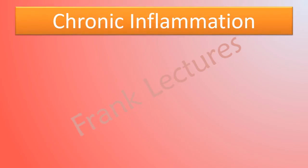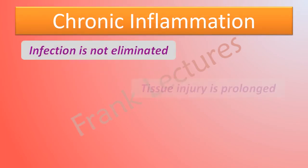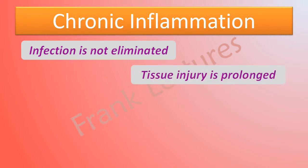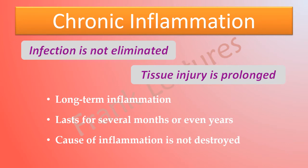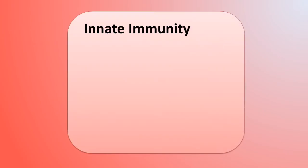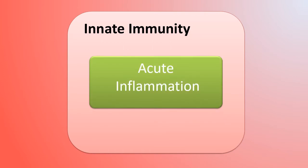If the infection is not eliminated and the tissue injury is prolonged, acute inflammation can lead to chronic inflammation. Chronic inflammation is a long-term inflammation that lasts for several months or even years. In chronic inflammation, the cause is not destroyed; the agent continues to produce tissue damage while host defenses try to destroy or confine it. Innate immunity mostly deals with infections and tissue injury by stimulating acute inflammation.